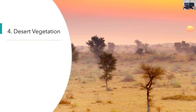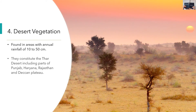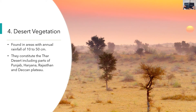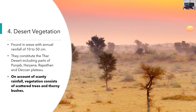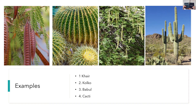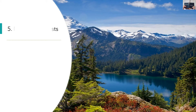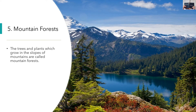Desert Vegetation: Desert vegetation is found in areas with very less rainfall — an annual rainfall of 10 to 50 centimeters. They are found in the Thar Desert including parts of Punjab, Haryana, Rajasthan, and the Deccan Plateau. On account of scanty rainfall, vegetation consists of scattered trees and thorny bushes. Some examples are jand, kair, kolko, babul, and cacti.